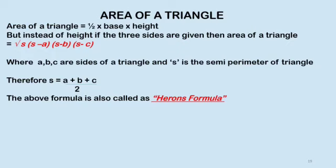But instead of height, if the three sides are given, then area of triangle is equal to square root of S(S minus A)(S minus B)(S minus C). Now here S is the semi-perimeter of triangle, where A, B, C are sides of triangle. So when the three sides are given, we use Heron's formula, that is S is equal to (A plus B plus C) upon 2.